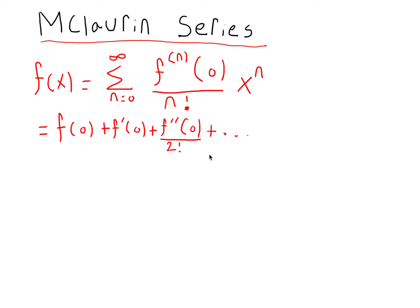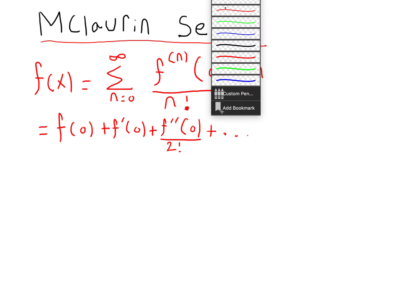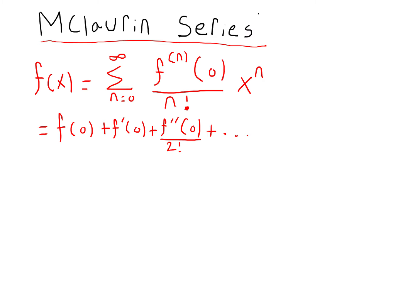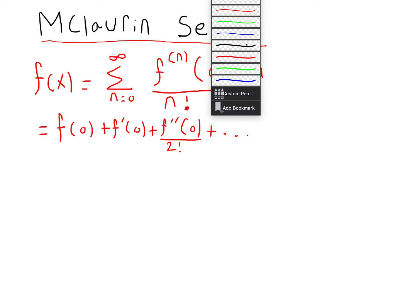So what is the Maclaurin series? It's basically a series of elements which uses derivatives in order to find an approximation of the value of a function. Here we have the first three general terms of the Maclaurin series. The Maclaurin series is a Taylor series where x is equal to zero rather than at a different number.